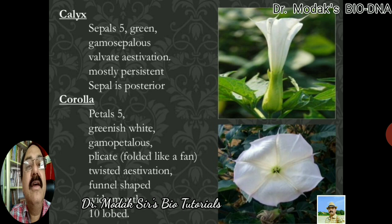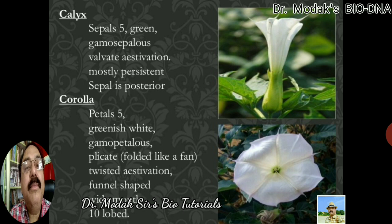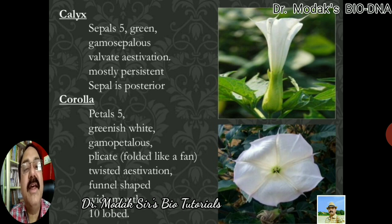In the figure you can see the corolla — the petals are five, they are greenish white in color. As it belongs to the Gamopetalae, the petals are fused and therefore corolla is gamopetalous. It is plicate, meaning folded like a fan. The aestivation is twisted — the margin of one petal is inner and the other is outer, so an inner and outer arrangement is present.